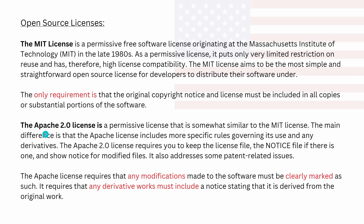Then you have the Apache 2 license, also a permissive license — somewhat similar, but with more restrictions. The Apache license requires that any modifications made to the software must be clearly marked as such a modification. It also requires that any derivative works must include a notice stating that this is derived from the original work.